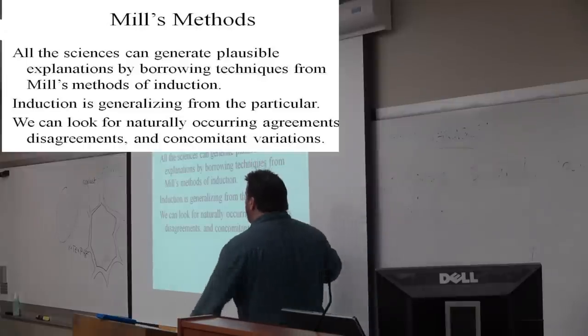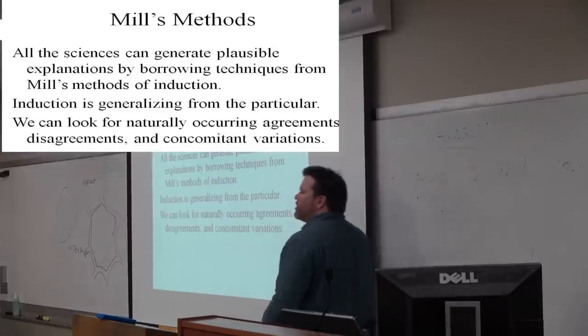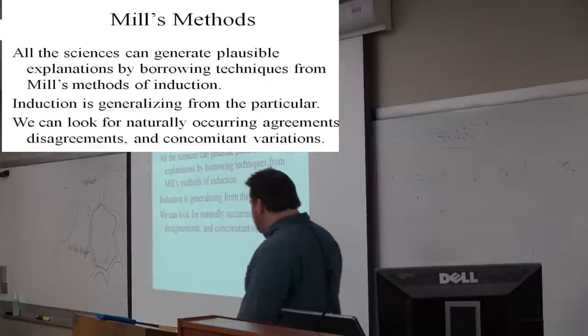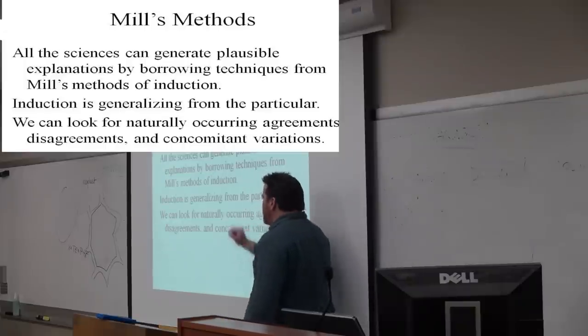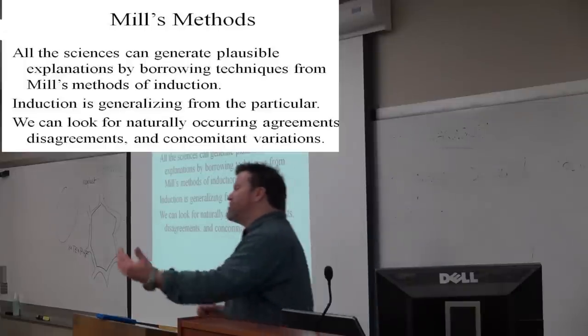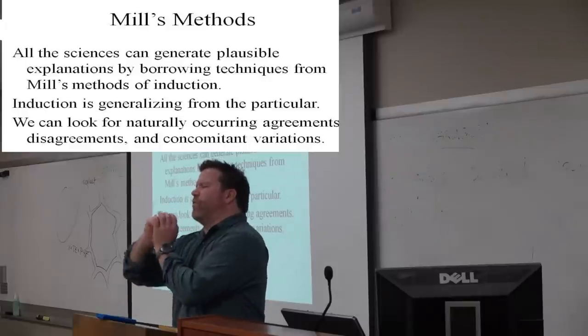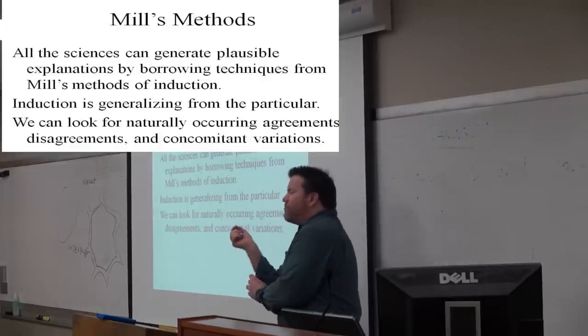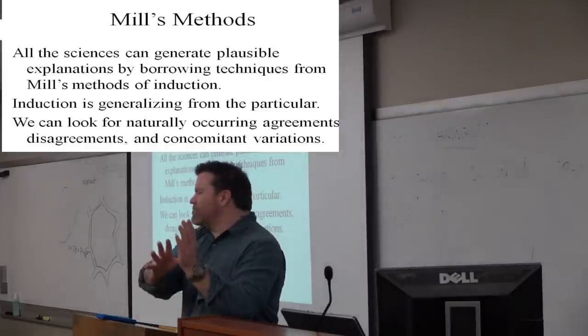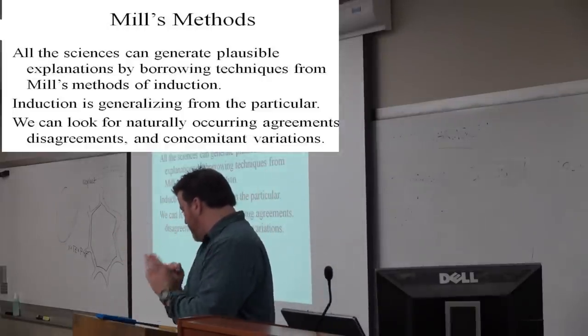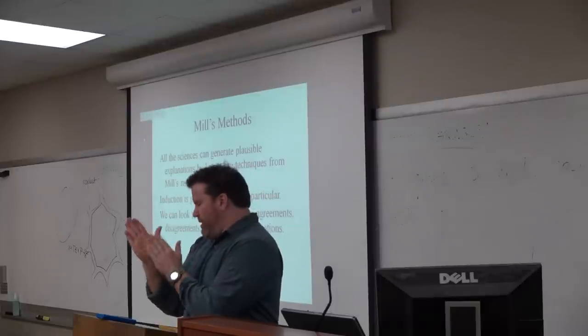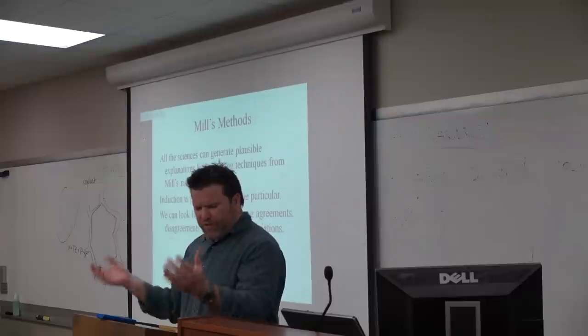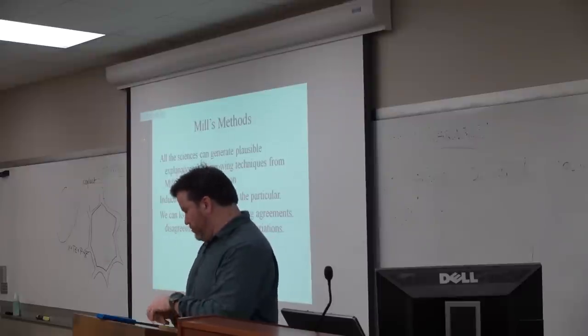And in particular, what we're going to do with Mill is we're going to look for naturally occurring agreements. At first, we're going to look for naturally occurring agreements, disagreements, and a nice fancy phrase, concomitant variations. They're fancy terms for stuff that you've probably all used before.